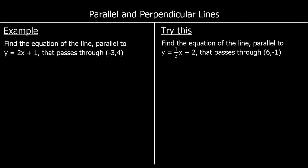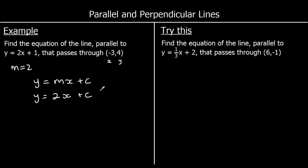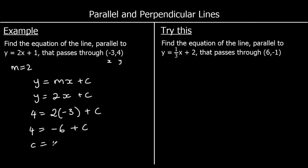Find the equation of the line parallel to y equals two x plus one that passes through the point negative three, four. Since it's parallel, the gradient is two. Using y equals mx plus c, we have y equals two x plus c. Substituting in: four equals two times negative three plus c, which gives four equals negative six plus c, so c is ten. The equation is y equals two x plus ten.